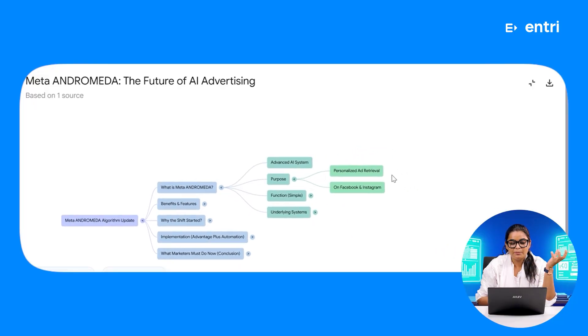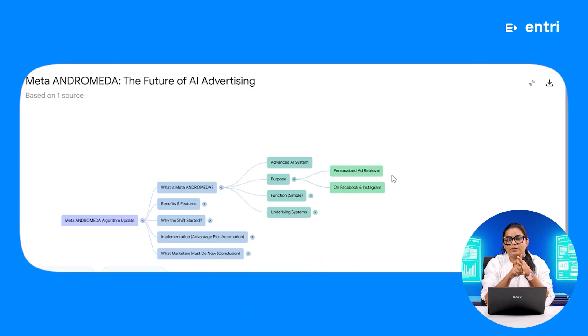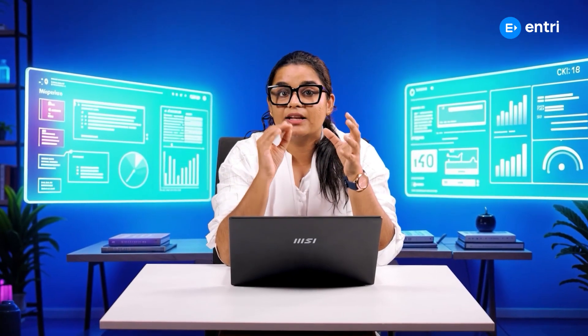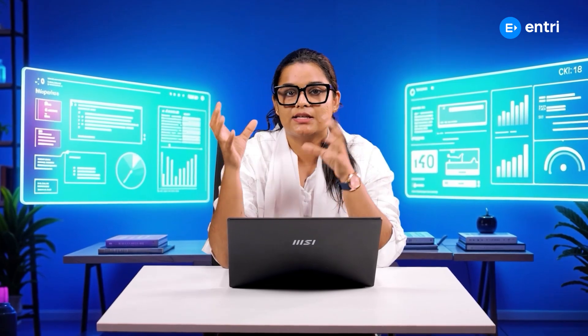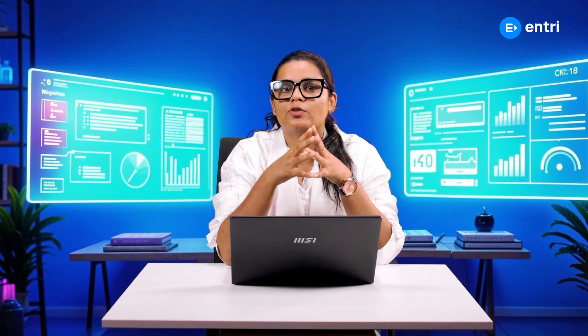When we look at the purpose of personalized ad retrieval, it will operate across Facebook and Instagram — that is our Meta platform: Facebook, Instagram, and WhatsApp. Personalized ads are served ethically. Now, what you experience is all the relevant ads in your feed. But now it's personalized — it's related to your interests, not just generic ads in your feed. This is a new update.